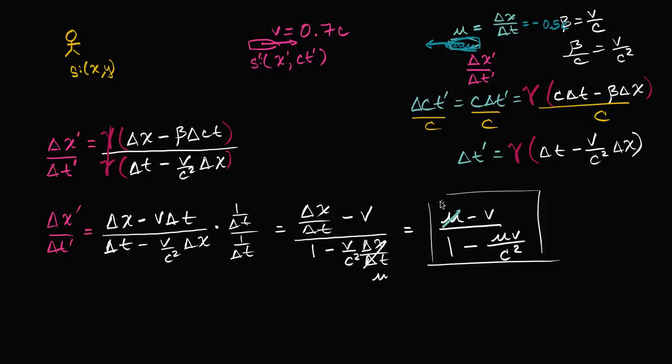So that is negative 0.5c. V is my friend's frame of reference, the frame of reference that we're trying to get the velocity in. So that's 0.7c.